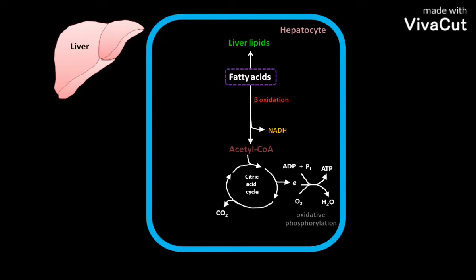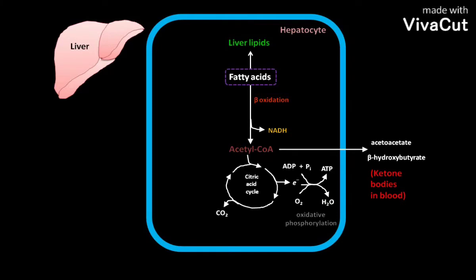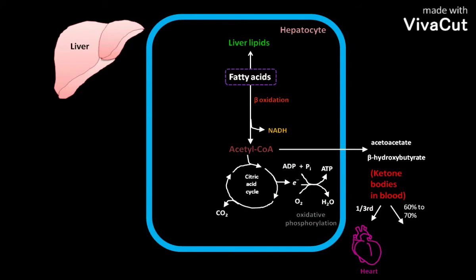Excess acetyl-coenzyme A not required by the liver is converted to acetoacetate and beta-hydroxybutyrate. These two molecules are considered ketone bodies and they circulate in the blood. Ketone bodies can supply a fraction of energy — up to one third in the heart and as much as 60–70% in the brain — during prolonged fasting.